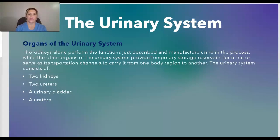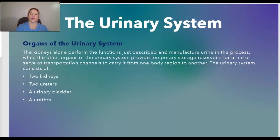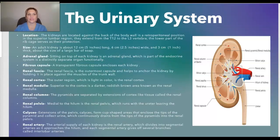Organs of the urinary system include the kidneys, which alone perform the functions just described and manufacture urine in the process. The other organs of the urinary system provide temporary storage reservoirs for urine or serve as transportation channels to carry it from one region of the body to another. The urinary system includes two kidneys, two ureter tubes on both the right and left side, a urinary bladder, and the urethra.